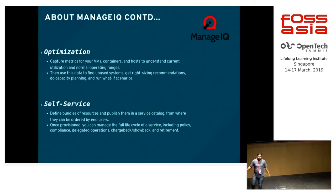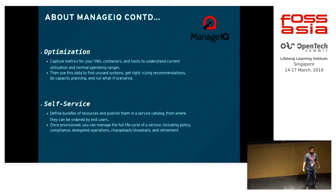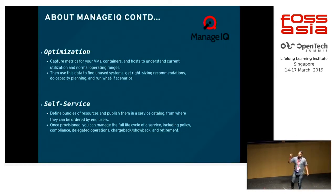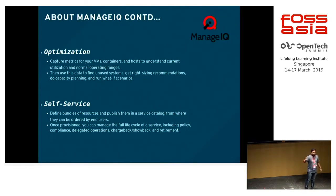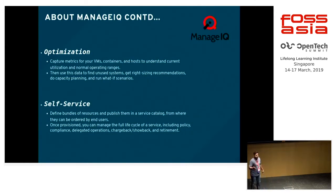For self-service, I'll give one analogy. Everybody uses shopping applications - whatever you want, search it, click it, and order it. Same thing here: create a bundle of your virtual machine containing your business logic. Suppose you want to deploy one application - create one VM, add your business logic, configure a database, and create a bundle. Order it via catalog. Users just need to click, select a service catalog, order it, and get an IP address to host their website.